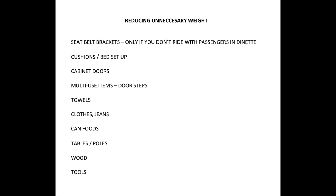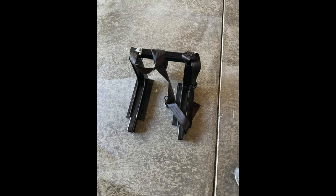We just take a scale, stand on it to find out our weight, and then hold something we're going to add to the motorhome, stand on the scale again, and take the difference in the weight. It's very easy to do as you're loading up the motorhome. I just want to show you a picture of the bracket — we had three of these under our dinette area, very heavy. I'd much rather carry something else than have to carry these, so it was a good find.